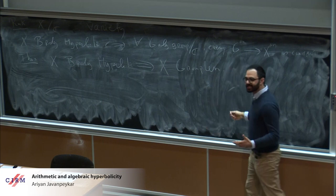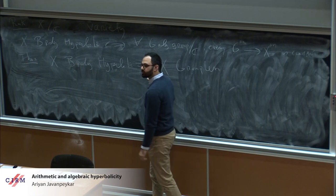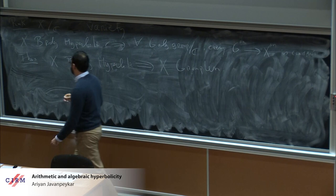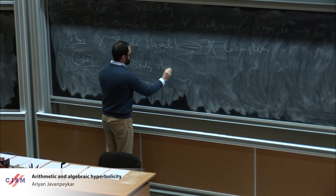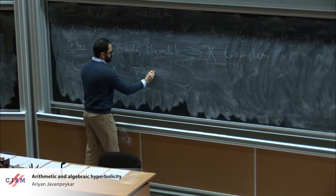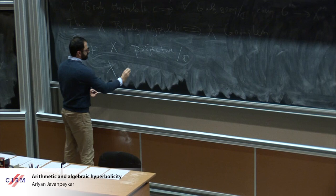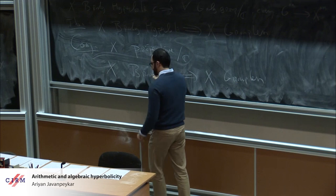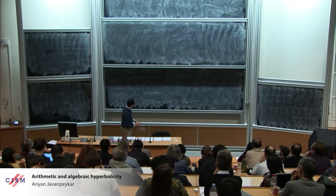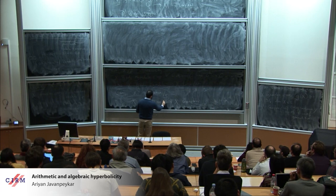The controversial conjecture is that the converse holds — that the presence of an algebraic group is the only obstruction to the presence of an entire curve. For projective varieties, if X is Brody hyperbolic, then it is groupless. The conjecture is that this is in fact an equivalence.